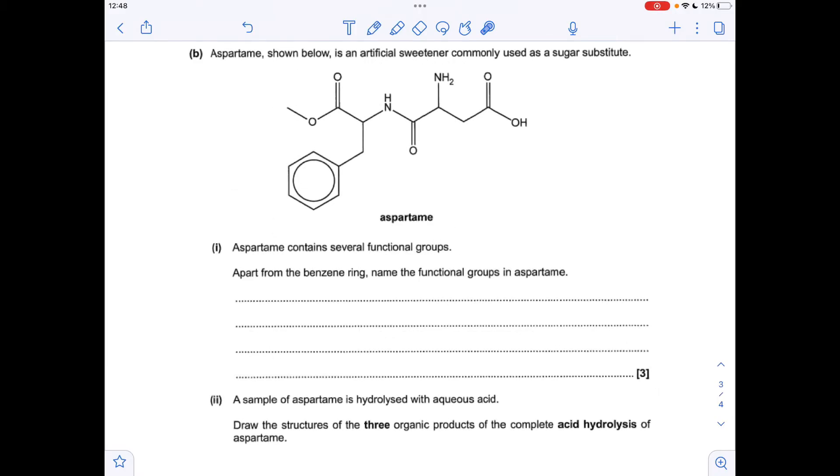Moving on to part B. Apart from the benzene ring, what are the functional groups in aspartame? We'll just go from left to right. The first one is the ester group. The next group we've got is this one here. So this is an amide group. It's actually a secondary amide but we just had to say amide.